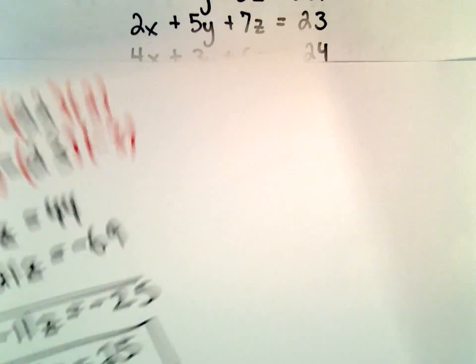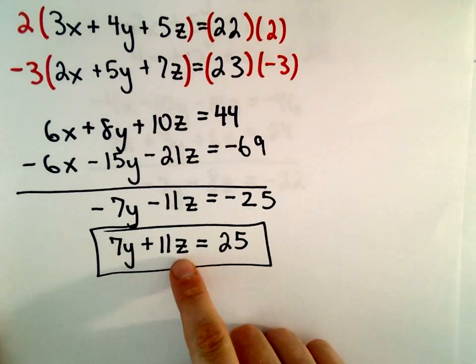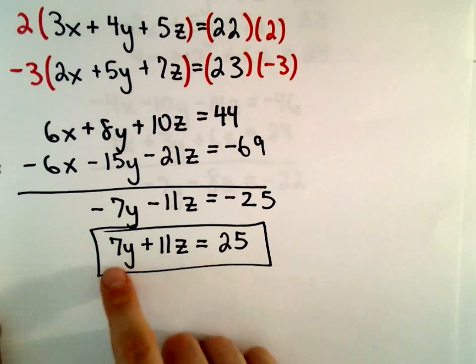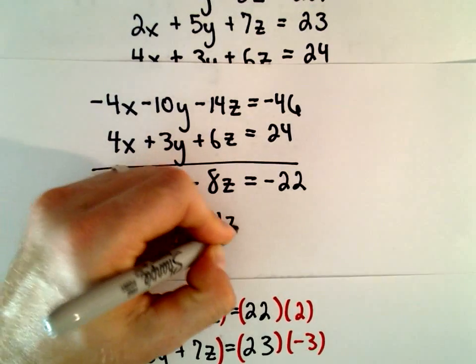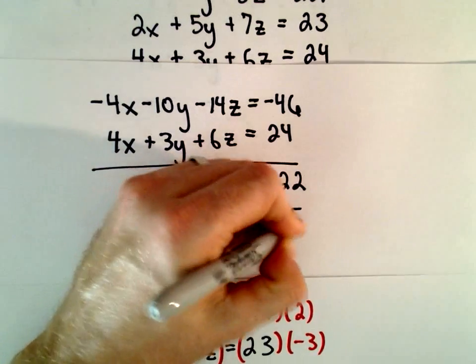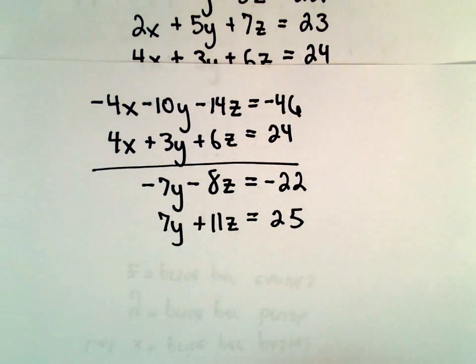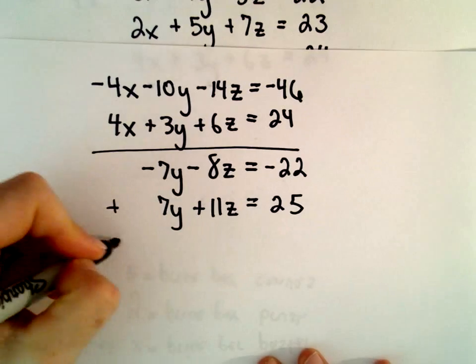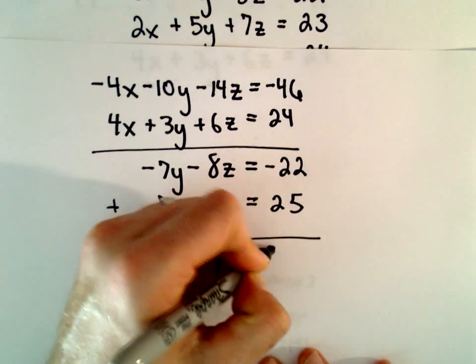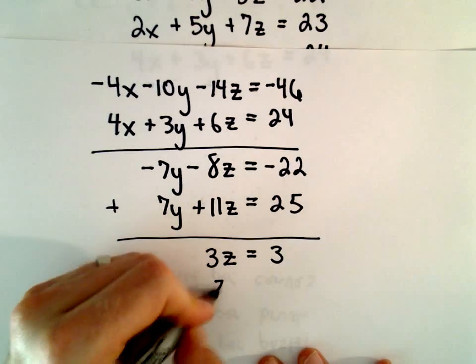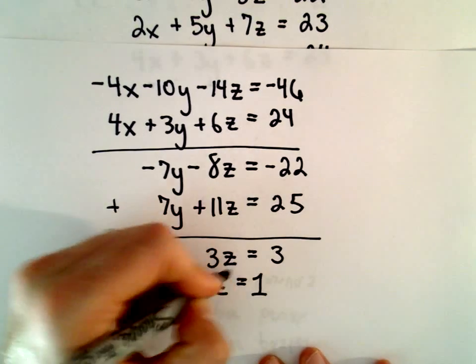But now I'm going to take our other equation, 7Y plus 11Z equals 25, and I'm going to add those two equations together. That'll leave us with 3Z equals 3. Well, that tells us that Z equals positive 1.